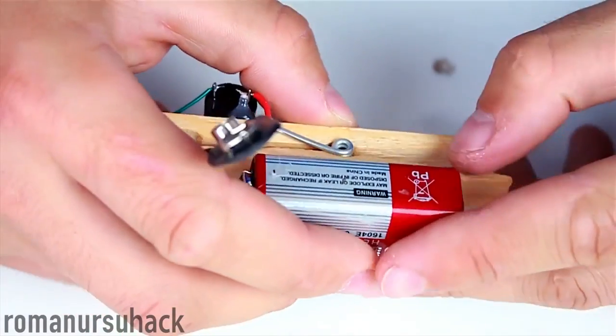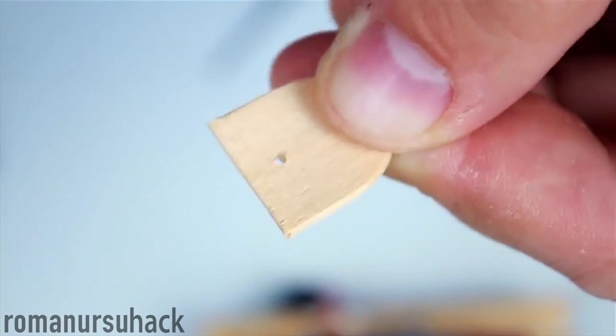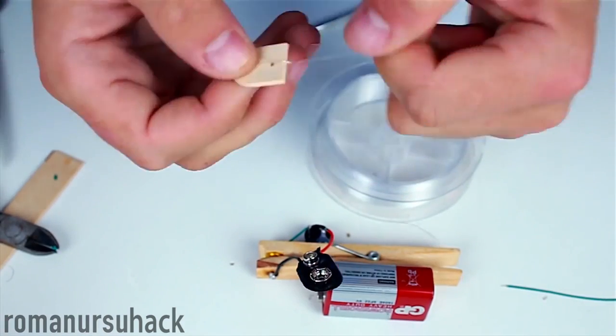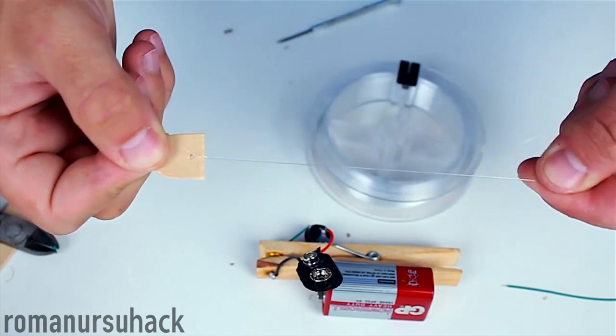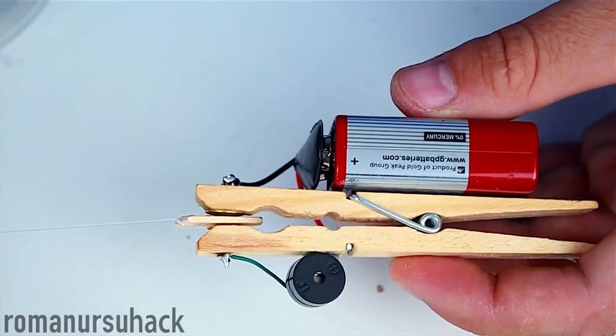After attaching the buzzer and the battery to the pin, we can start making our security alarm. We need to drill a small hole through a piece of the ice cream stick and fasten a line to it. I think the main principle of our DIY security alarm should be pretty clear and doesn't require an explanation. So let us test it out.